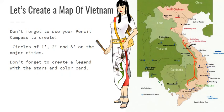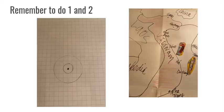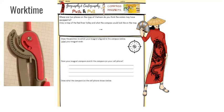Today we are going to create a map of Vietnam. Don't forget to use your pencil compass to create circles of one, two, and three inches on the major cities. Don't forget to create a legend with the stars and your color card as well. Remember, make circles and add circles to your map. Also, don't forget to work on your worksheets about push and pull, which talks about the magnetism you'll be using when you create a magnet.